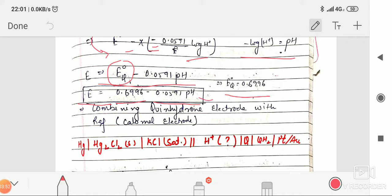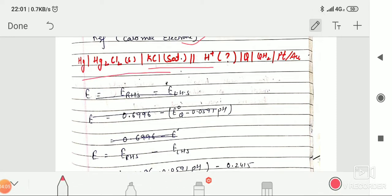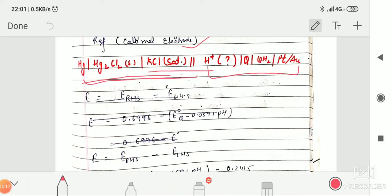We will connect this half electrode with the reference electrode to make a complete cell, and then we will determine the EMF of this complete cell and put it into the formula. This cell will be constructed: here is your quinhydron electrode and here is the reference electrode, the calomel electrode.